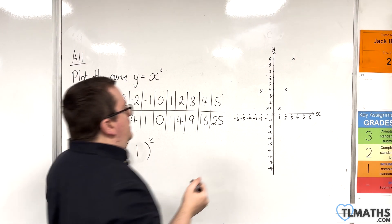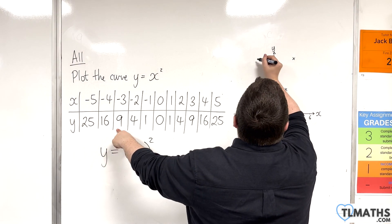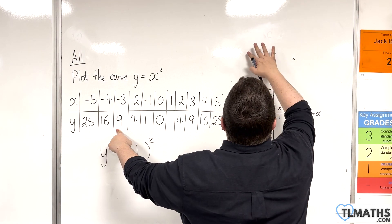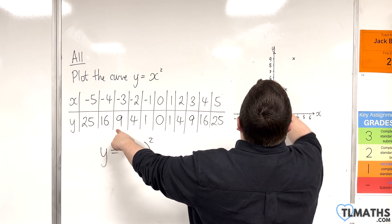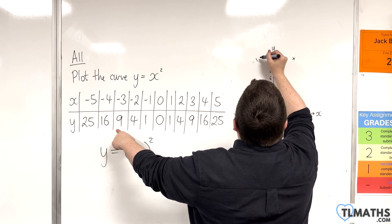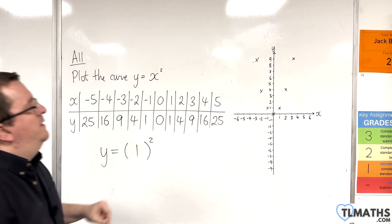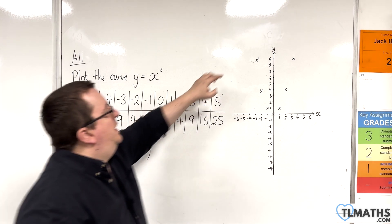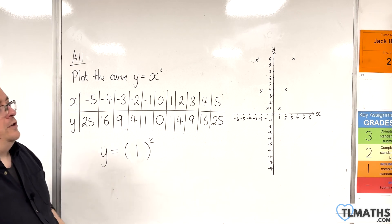Minus 3, 9. So, minus 3, 9. It's about there. Slightly over. About there. Minus 3, 9. And then, minus 4, 16 is beyond where I can draw my graph.